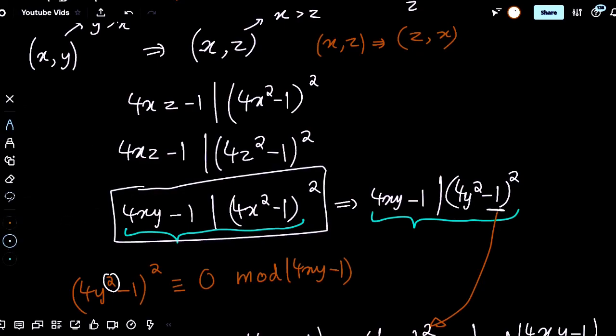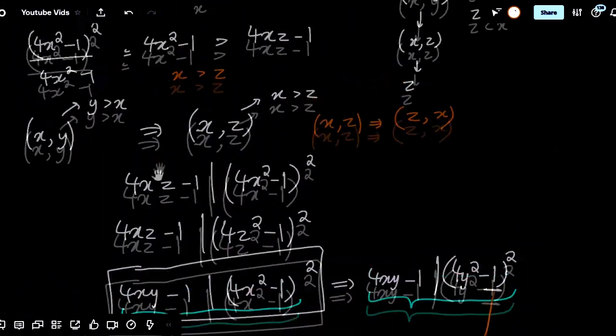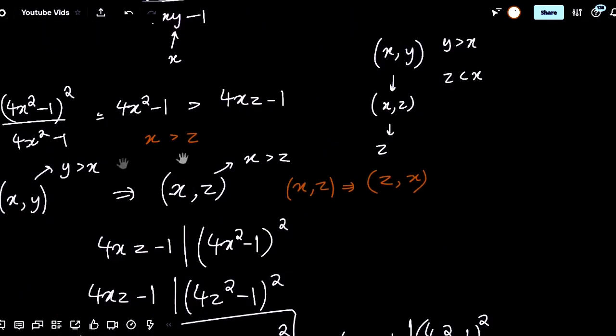So, therefore, we have our huge expression here. Well, that's simply congruent to 0 mod 4xy minus 1. That means that 4y squared minus 1 whole squared is also congruent to 0 mod 4xy minus 1. We've proven our symmetry now. And we can now proceed and prove this by infinite descent.